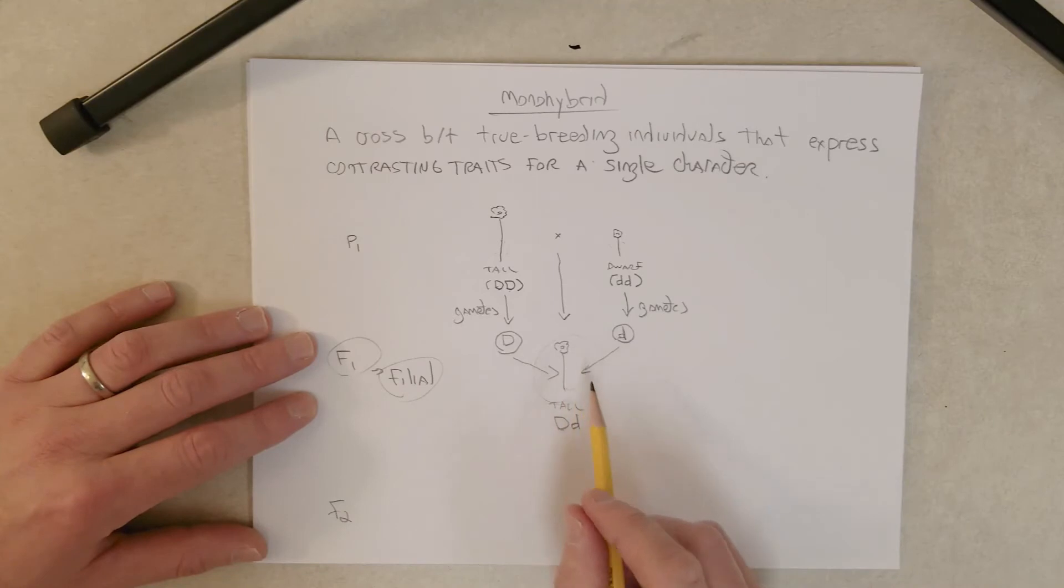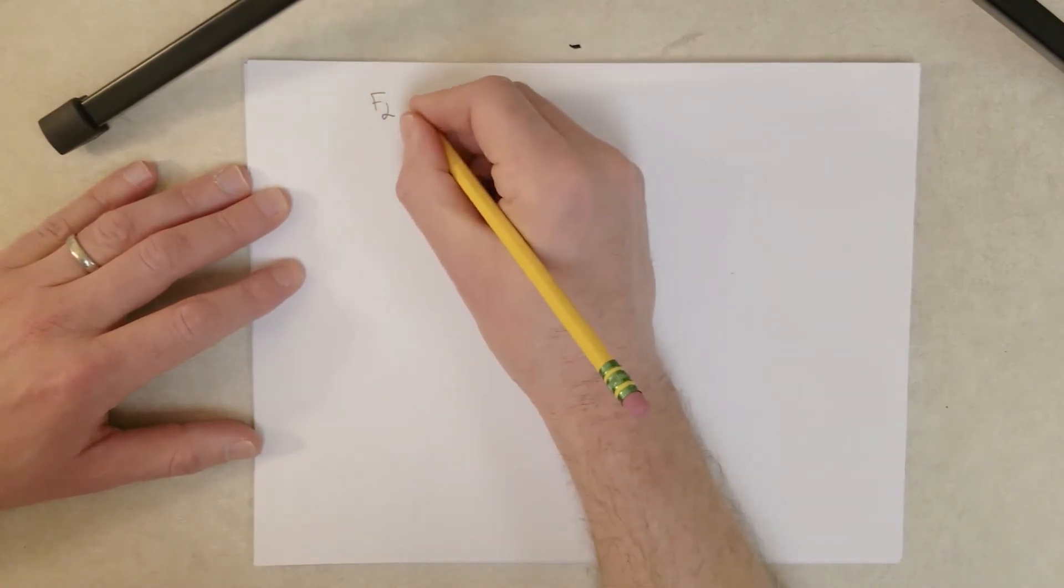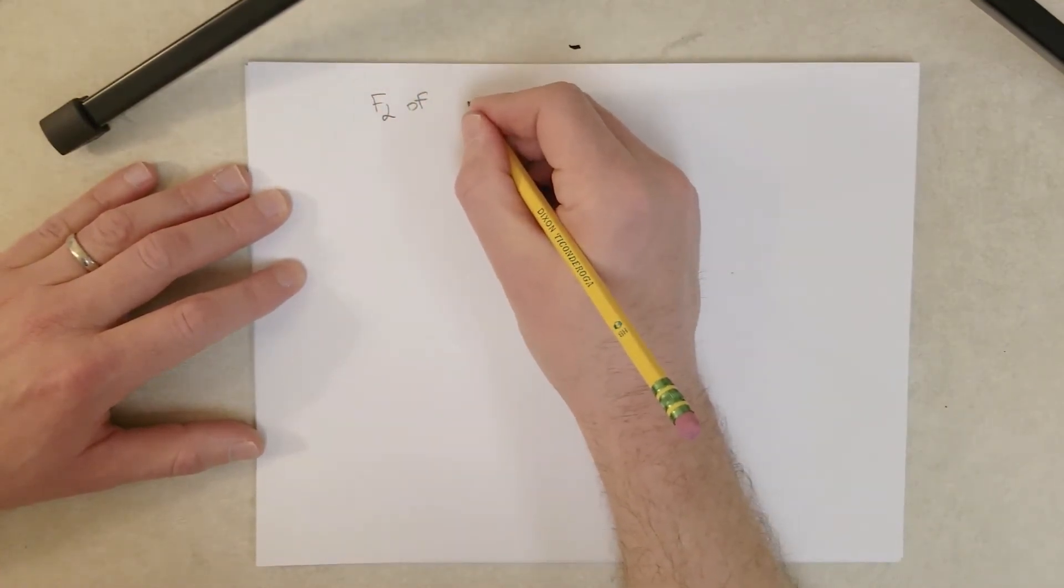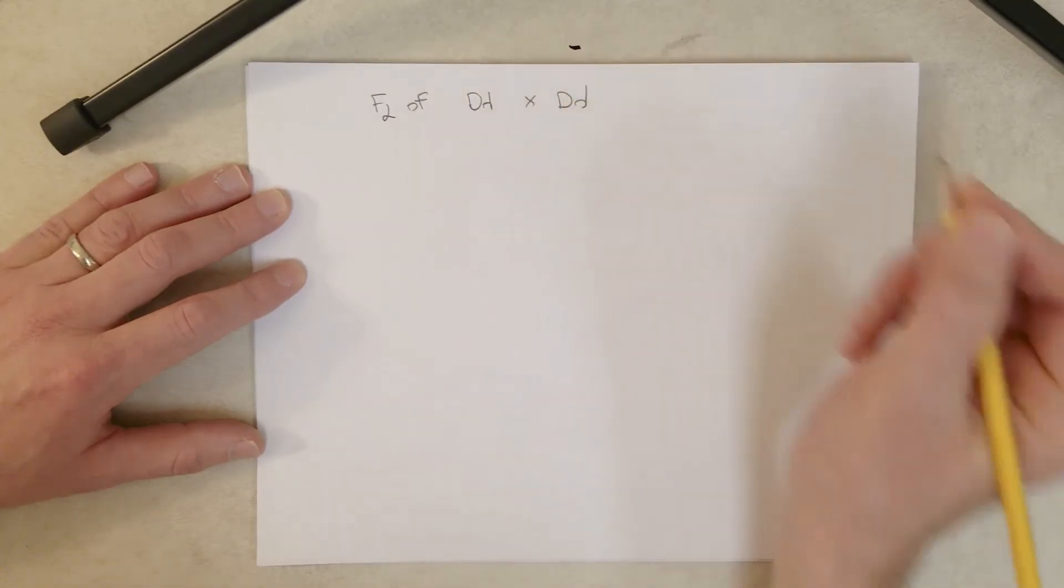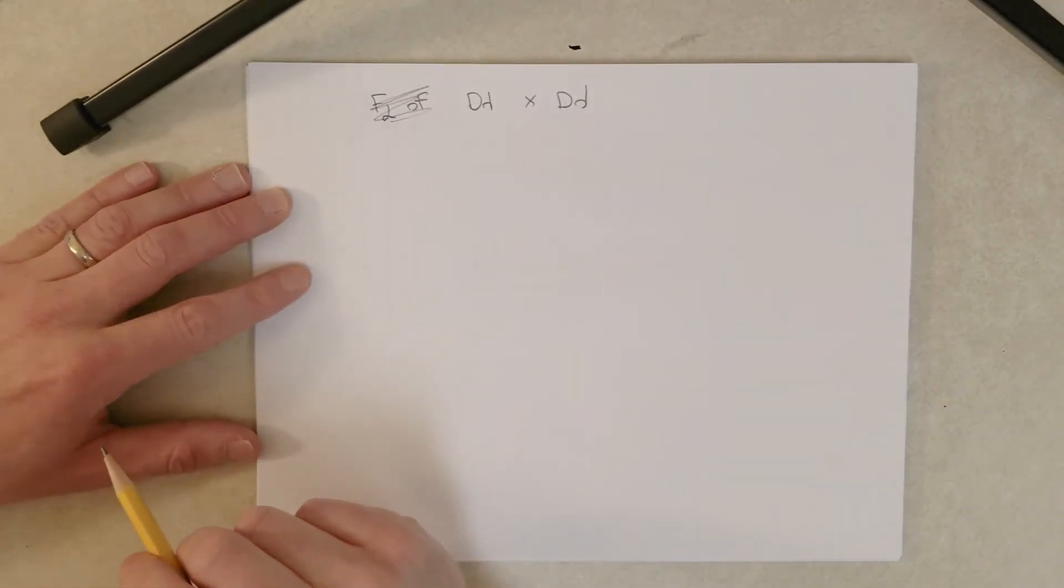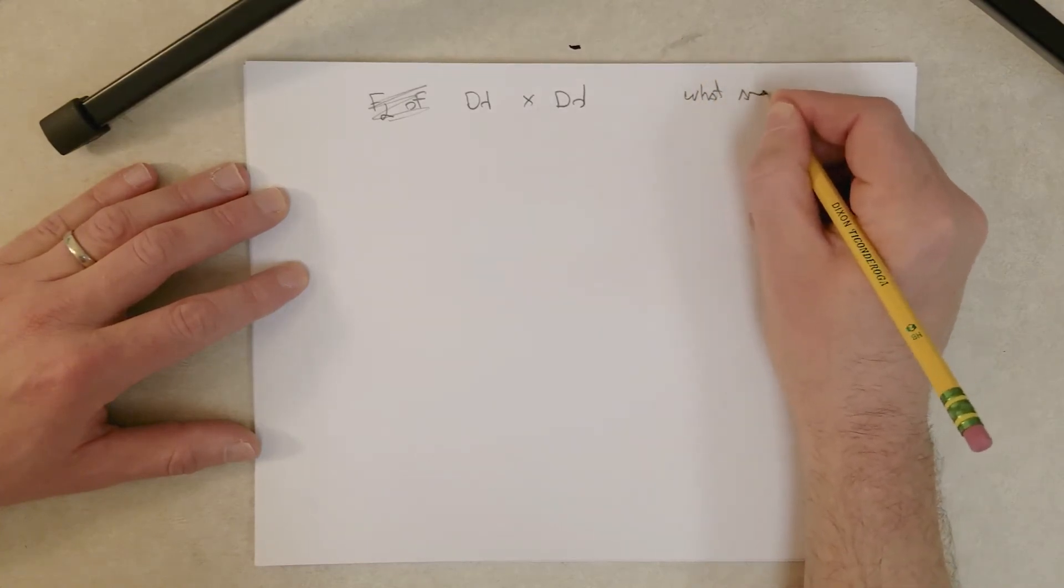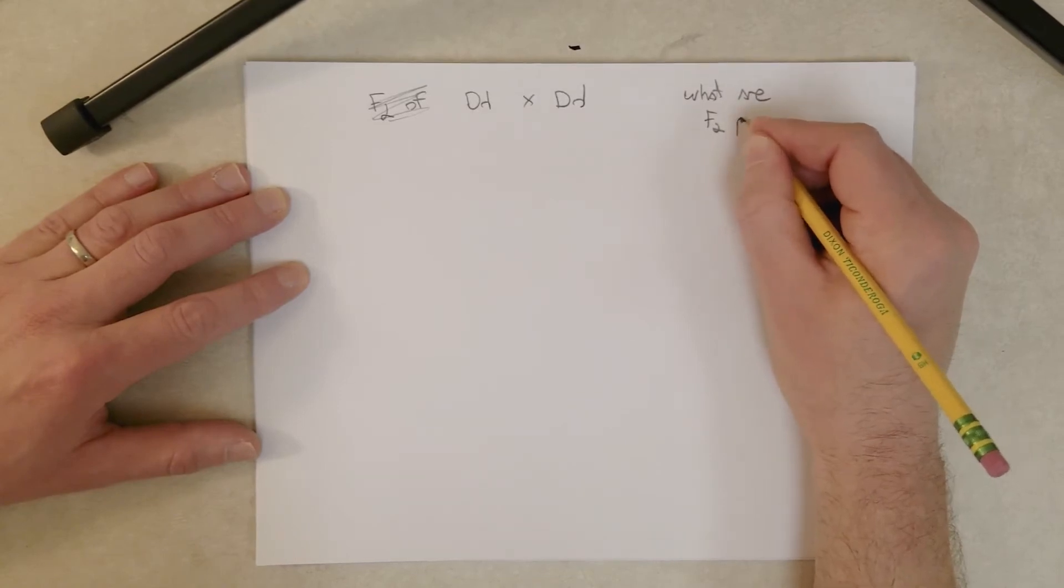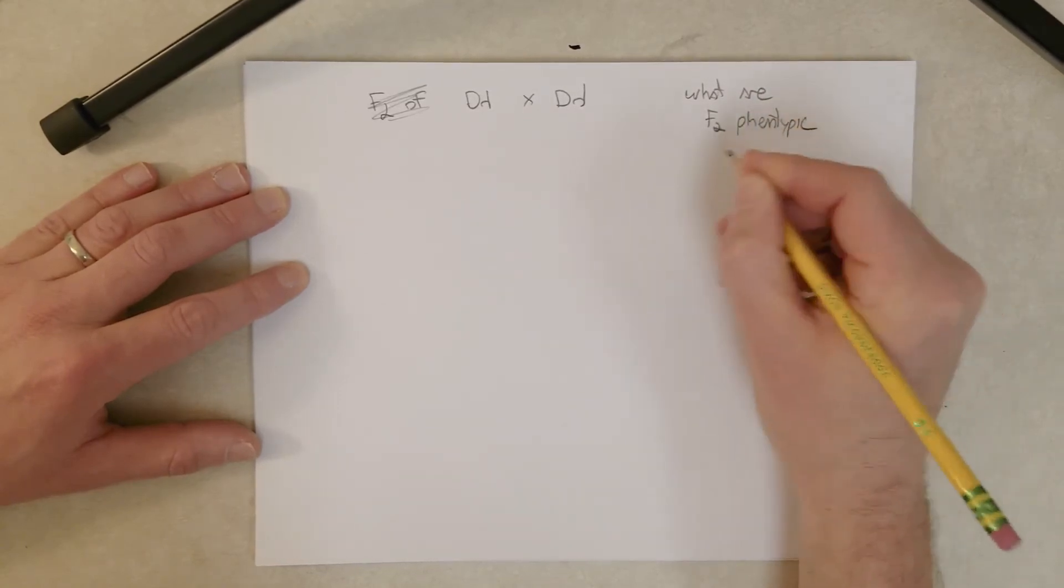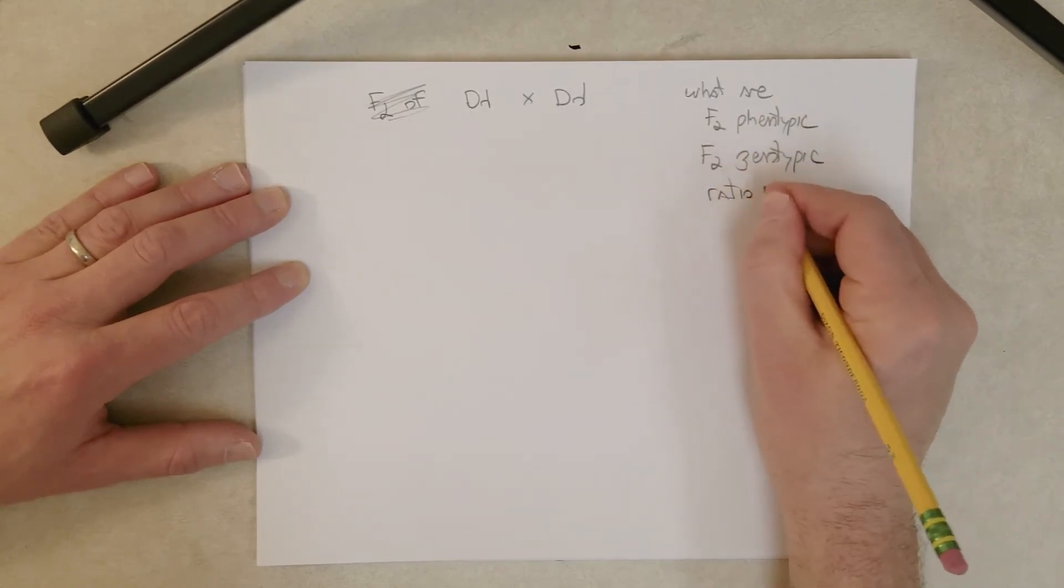So we're going to cross a tall plant to another tall plant with the same genotype from the F1. And let me switch pages here. So F2 of this cross here: we cross these two and we're going to get the F2 generation. And what we want to do is determine what are the F2 phenotypic and F2 genotypic ratios.